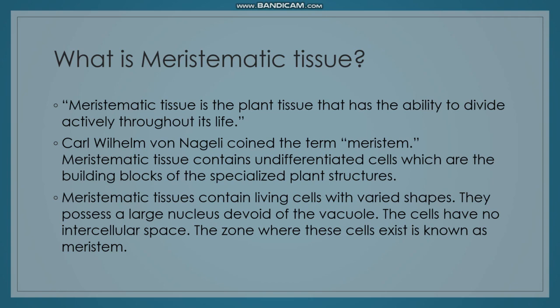The nucleus controls all the activities that take place in the cell. Vacuoles are the empty parts of the cell. The cells of meristematic tissue have no intercellular spaces. The zone where these cells exist is known as the meristem.